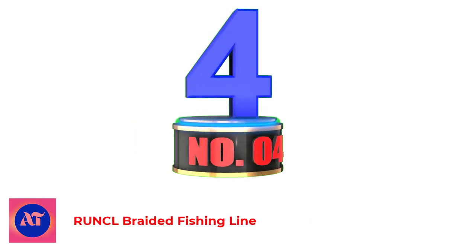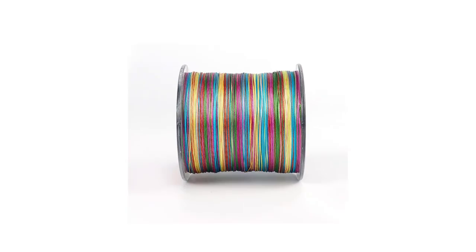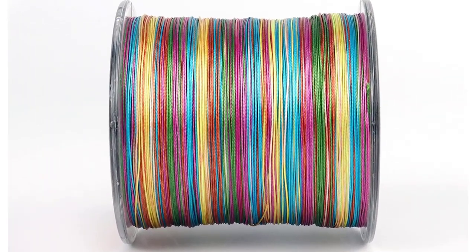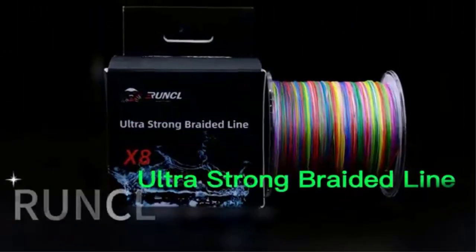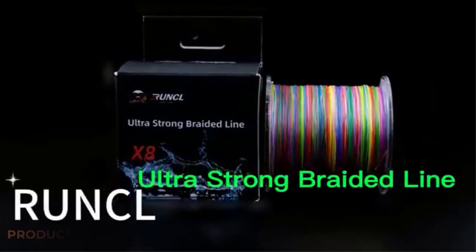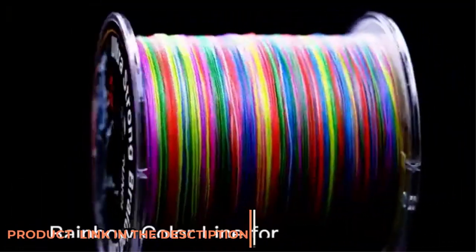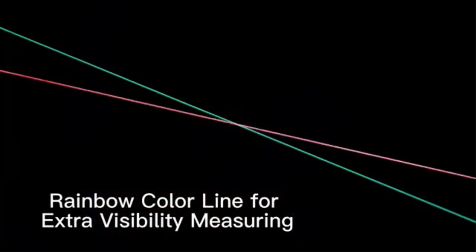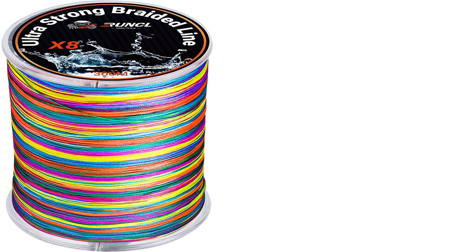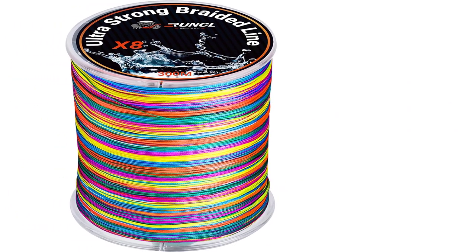Number 4. RUNCL Braided Fishing Line. RUNCL's Ultra Strong Braided Line lives up to the name. With eight lines braided together, this is a tough line that can stand up to a lot of abuse. This stuff seems to be able to stand up better than your average braid. The abrasion resistance is top-notch, and your knots are going to be significantly stronger.